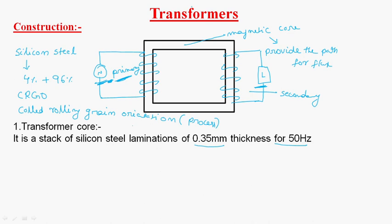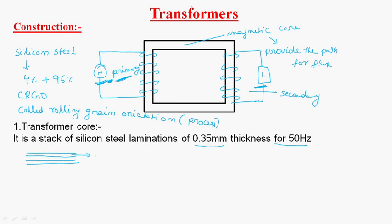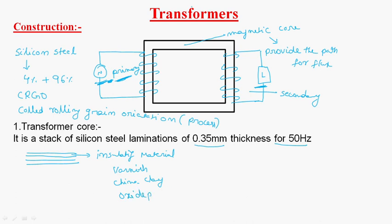This CRGO steel material is taken and made into laminations. A solid core is taken and cut into slices — those are laminations. Each lamination is separated with an insulating material such as varnish, china clay, or oxide paint — generally called red oxide paint.